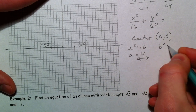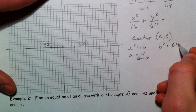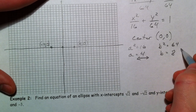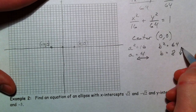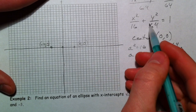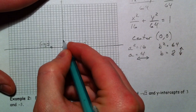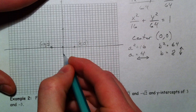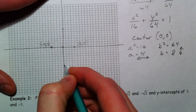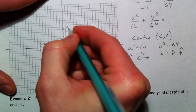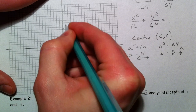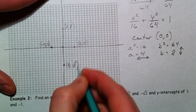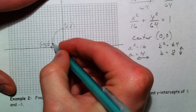b squared is 64, so b equals 8. That tells us how far up and down to go because it's underneath y. So we go 8 units up and 8 units down from the center, plotting points at (0, 8) and (0, -8). And there is your ellipse.